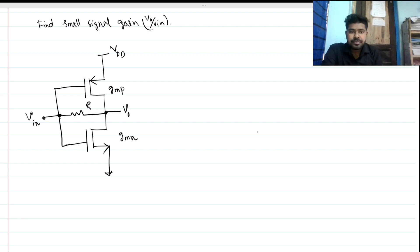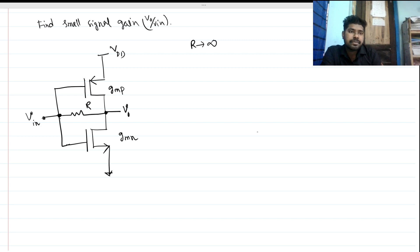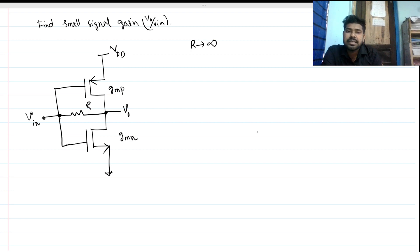Let's analyze this circuit for two cases: when R is infinite and when R is zero. When R is zero, the resistor is short-circuited. When R is infinite, the resistor is open-circuited.